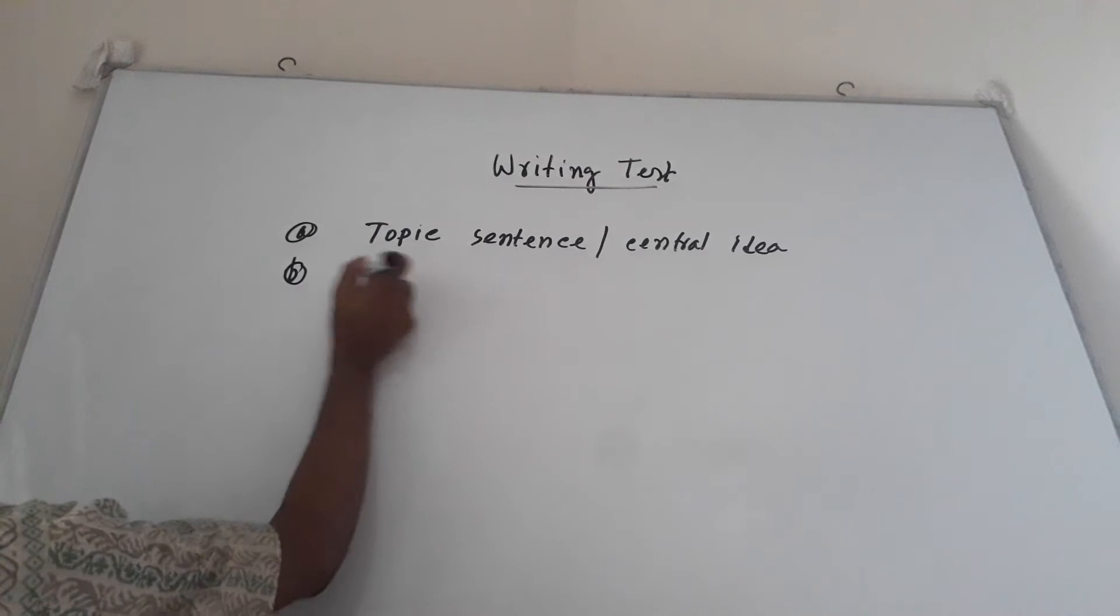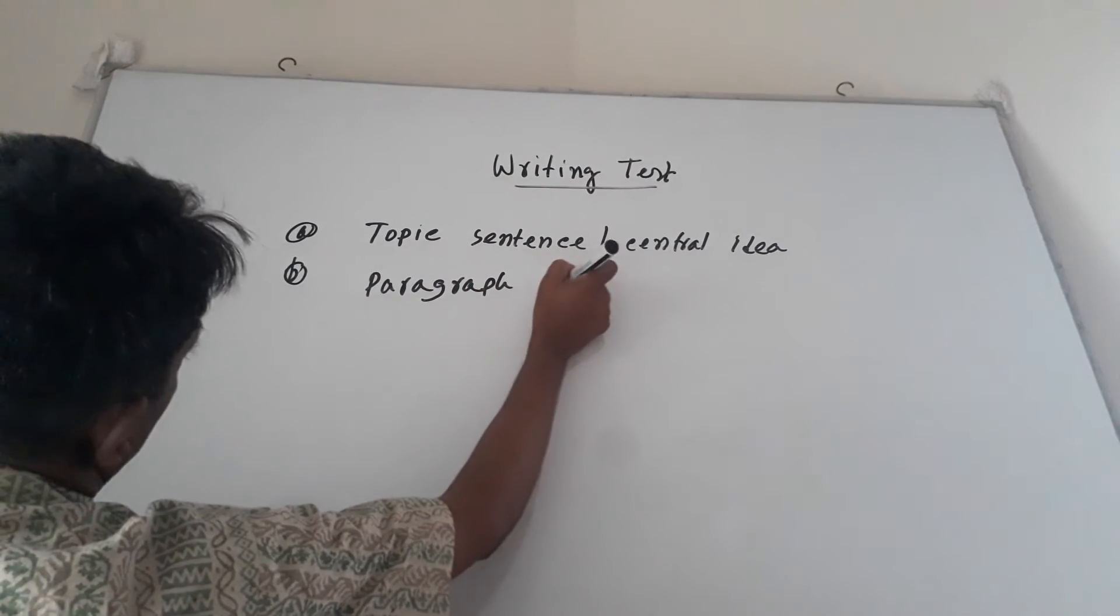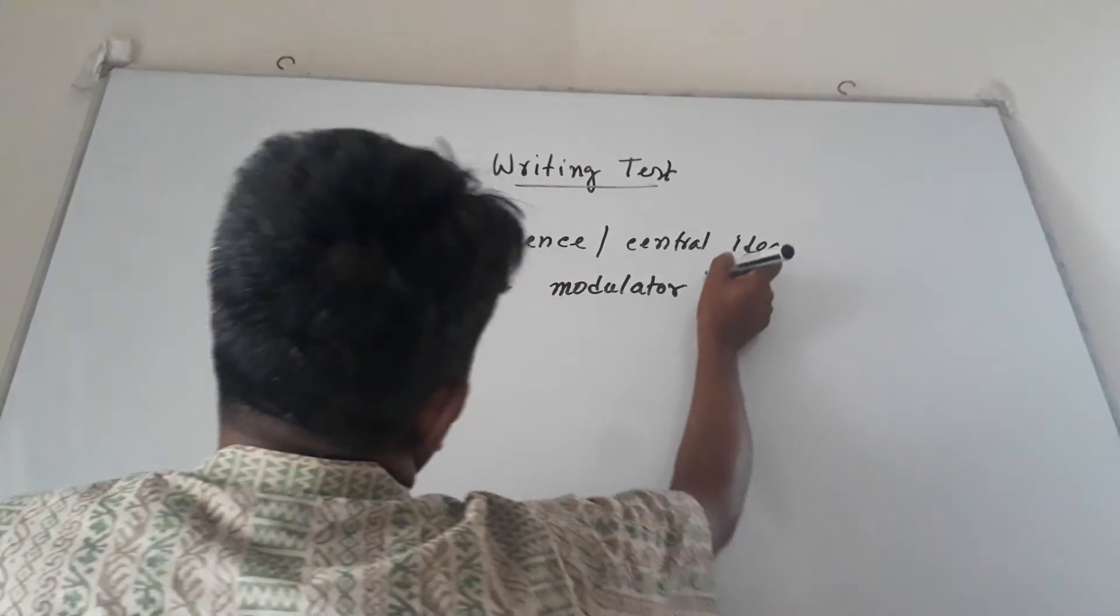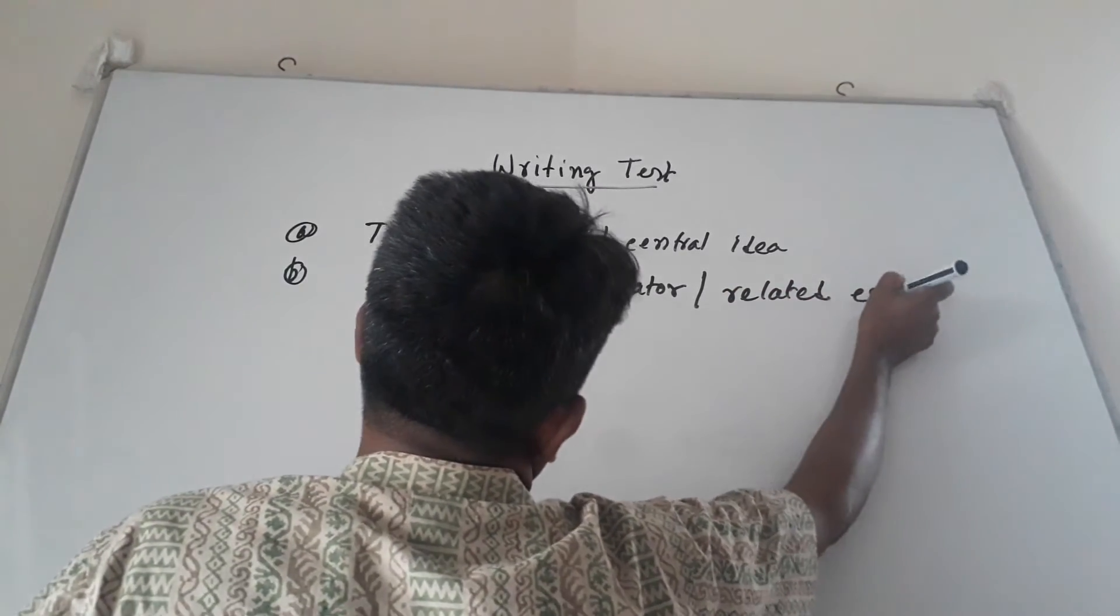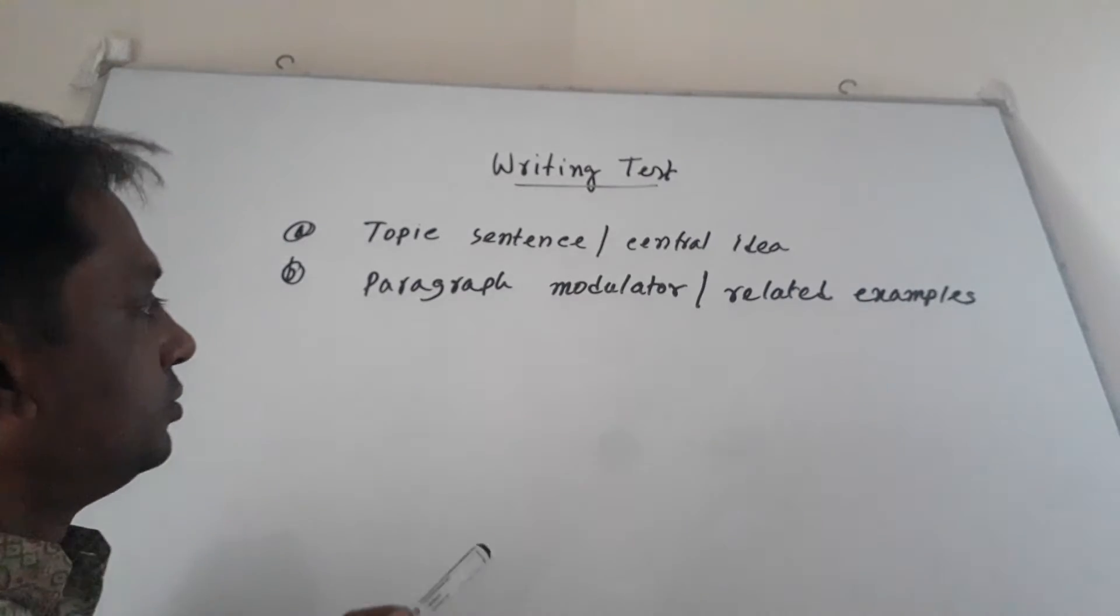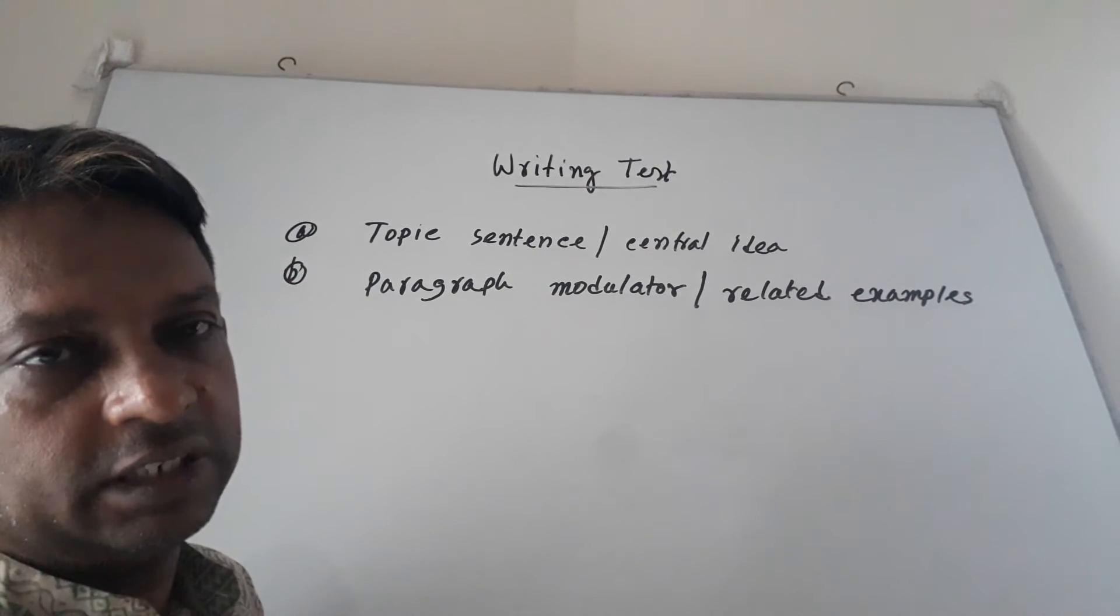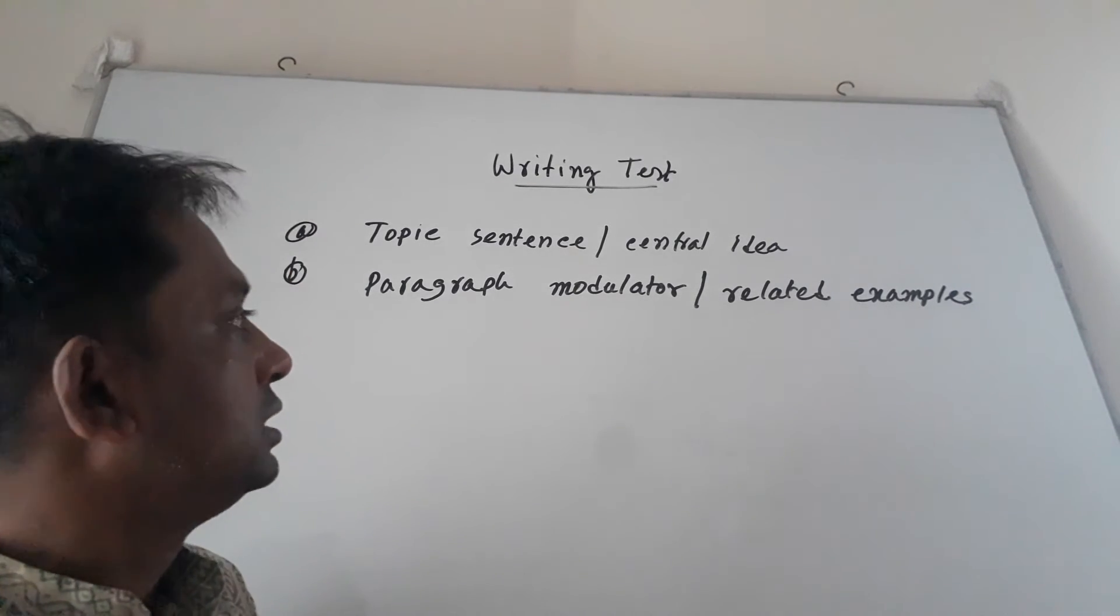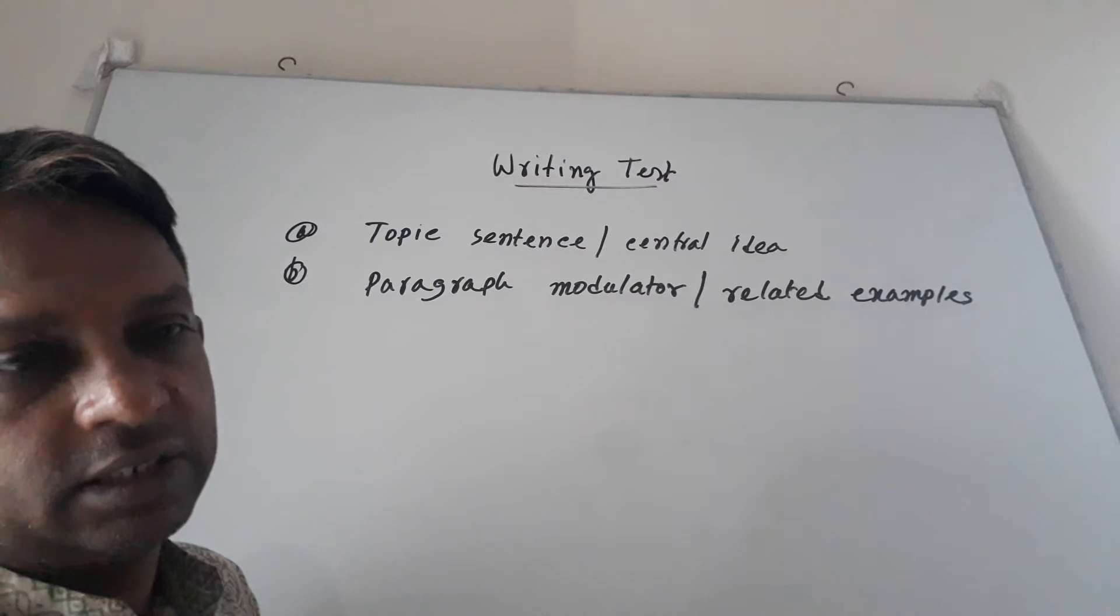The second one is paragraph modulators or related examples. When you write any paragraph, you must give some examples after giving your central idea or topic sentence. You must give some instances or examples so that you can write other sentences based on them.